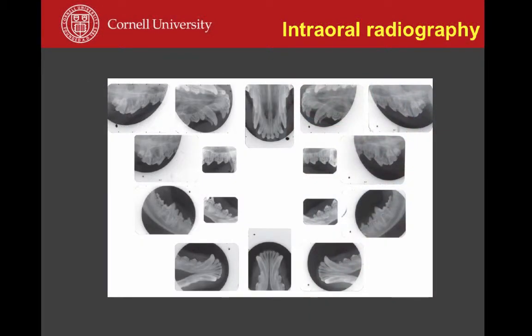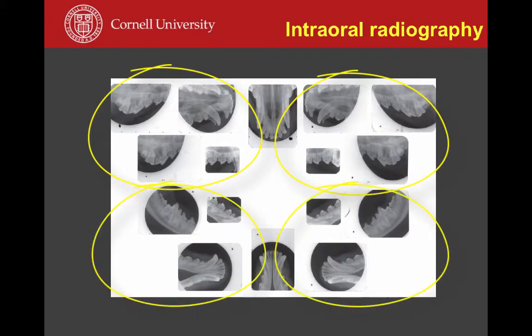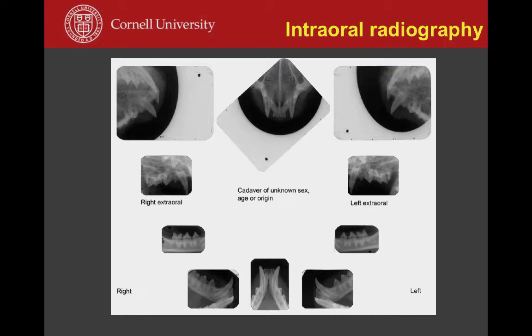Intraoral radiography complements the clinical examination and is essential to fully diagnose dental disease. This is an example of a full-mouth study in a dog. Using labial presentation on the view box, everything is displayed as if the animal were in front of you with the mouth open: the right maxilla, left maxilla, left mandible, and right mandible. A similar setup applies to cats. In dogs, a full-mouth study requires 10 to 20 radiographs; in cats, you can get away with just 10 or 12.